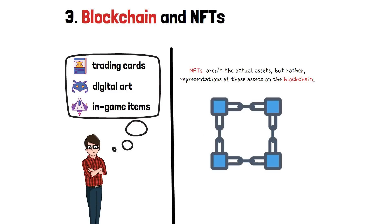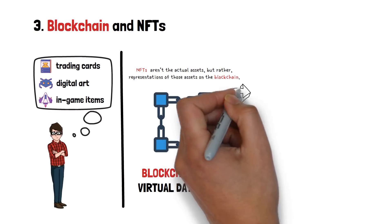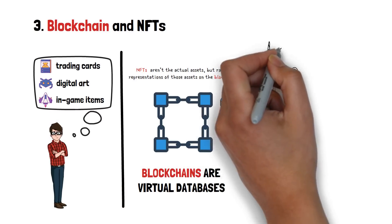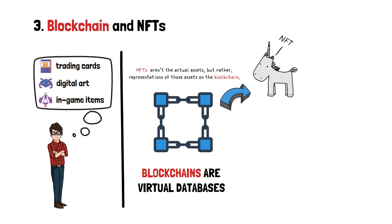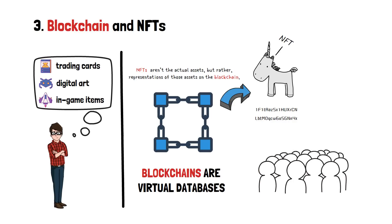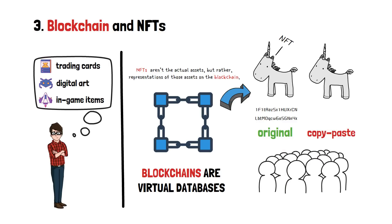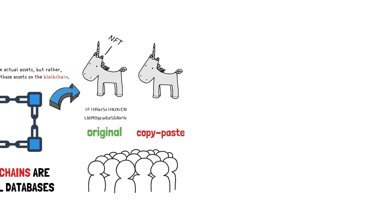Blockchains are essentially data storage locations — virtual databases, if you will. If you were to create a unique token, an NFT, on a blockchain, it would receive a special code which would be used to identify it in the future. Since blockchains are mostly public, everyone would be able to see that the token was both created by you and that it's the original — not a copy-pasted version made by your friend or some random person on the internet. That's a lot to wrap your head around, but don't worry, it gets easier from here.